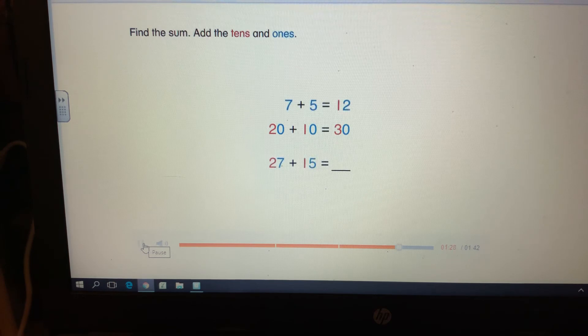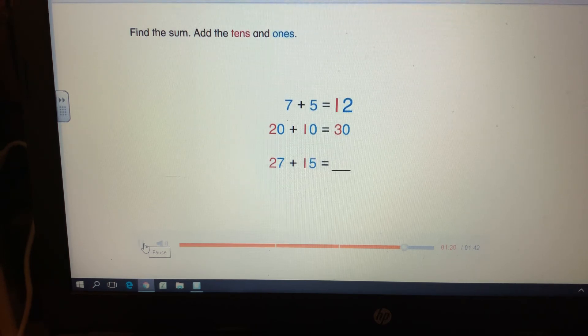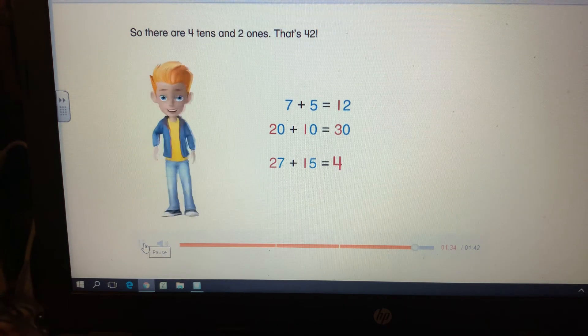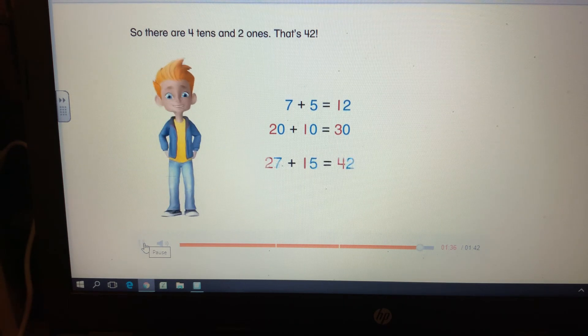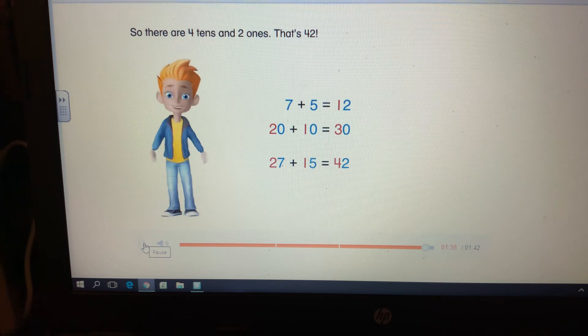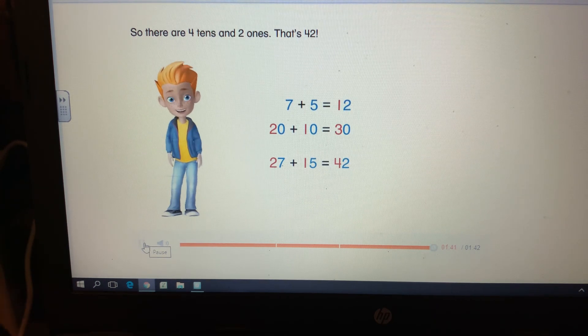Find the sum. Add the tens and ones. So there are four tens and two ones. That's 42. Now you know how to add using place value.